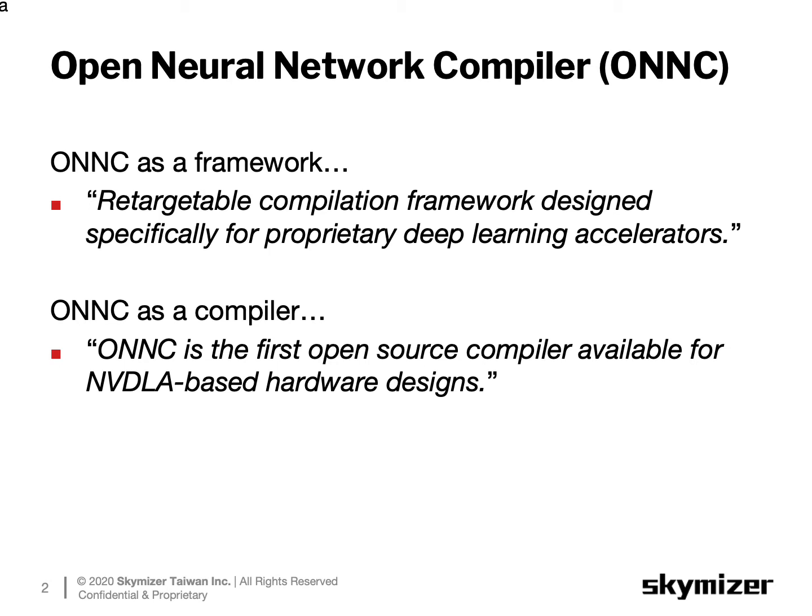ONNC currently supports multiple target backends. In the current open-source release, there are three full-functional backends, including a C backend, an x86 backend, and an NVIDIA backend. For any specific target, ONNC can serve as a compiler, a calculator, or even a workload generator for simulations.